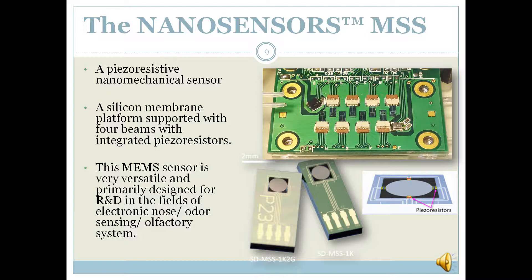Upon absorbing volatile organic compounds, the receptor layer yields surface stress and deforms the membrane, which induces resistance changes in the piezo resistors. By monitoring the Wheatstone bridge output, the presence of the target gas or odor molecule is detected. The MSSS8RAM is a USB-powered basic electronic module to operate and read out nanosensors MSS — up to eight sensors simultaneously under a hardware configuration. For electronic nose odor sensing, the MSSS8RAM contains two air pumps, and users can examine self-prepared MSS sensors under different gas flow conditions. It is designed to be as simple as possible so users can learn about a basic e-nose system and further improve performance.